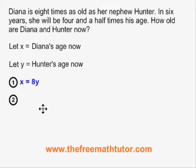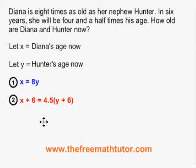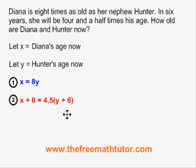Diana's age now equals eight times Hunter's age now. The next sentence — in six years she will be four and a half times his age — gives us the second equation: x plus six equals four and a half times the bracket y plus six. Both Diana's and Hunter's ages have been corrected by adding six because we are talking about six years in the future.